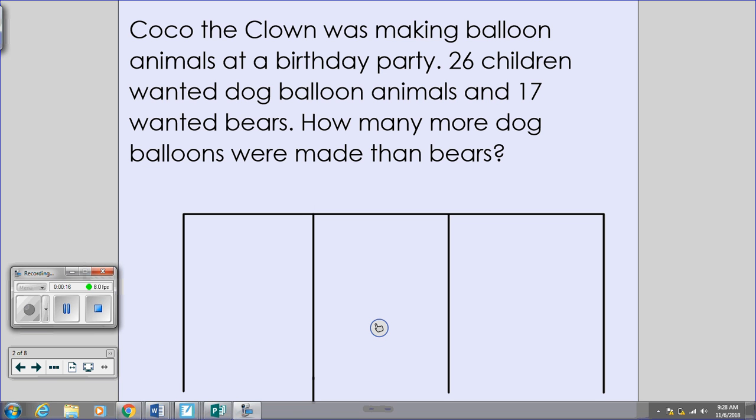So the problem that we're going to start, it's a different version of our balloon animal clown from yesterday. It reads, Coco the clown was making balloon animals at a birthday party. 26 children wanted dog balloon animals, and 17 children wanted bears. However, we want to know how many more dog balloons were made than bears.